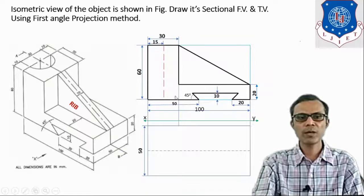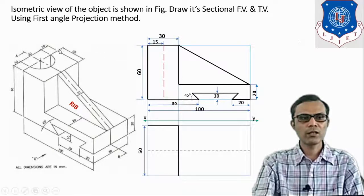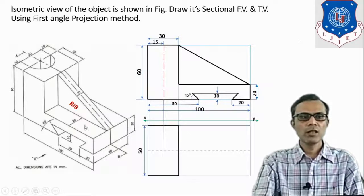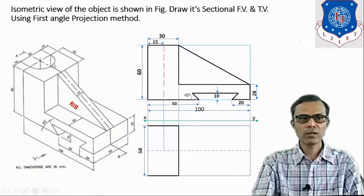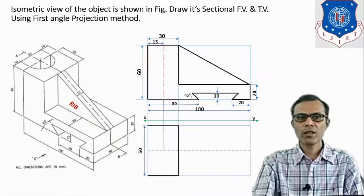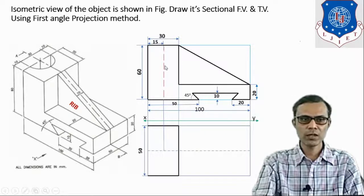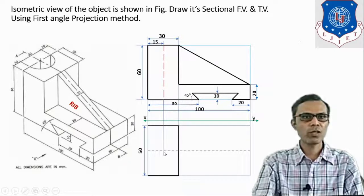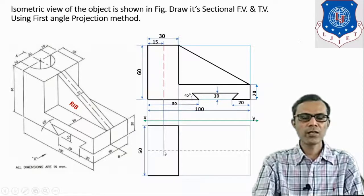For this semicircular wall, we need to locate its center, which is located at a distance of 15 mm. For the hidden detail, draw the projection. Draw a semicircle with this point as center, take radius 15 mm, and draw the semicircle with dotted lines.